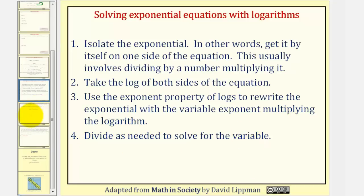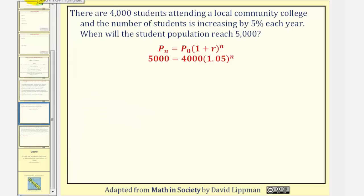So going back to our example, we want to begin by isolating the exponential part, which is 1.05ⁿ. So for our first step, we'll divide both sides by 4,000. So this will simplify to one. On the left, we have 5,000 divided by 4,000, which would simplify to 5/4. So we have 5/4 = 1.05ⁿ.